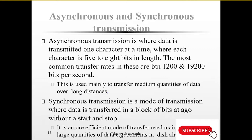Data transmission modes are understood as asynchronous or synchronous. Asynchronous transmission is where data is transmitted one character at a time, where each character is sent with a source and destination address — it is sending data divided into smaller bits. Synchronous is the sending of data as a whole, without dividing it into smaller bits.